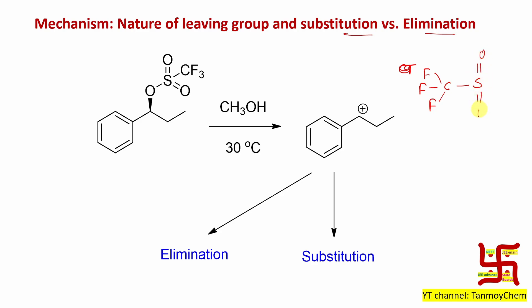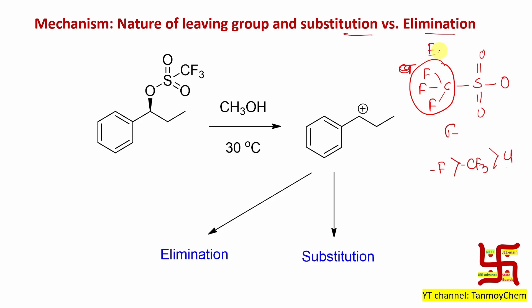There are three fluorines attached to this carbon. Remember, fluorine is a very high electron-withdrawing group. This CF3 is a very strong sigma-withdrawing group. The CF3 electronegativity value is in between fluorine and chlorine — fluorine is more electronegative than CF3, and CF3 is more electronegative than Cl. So this is actually a very strong electron-withdrawing group.